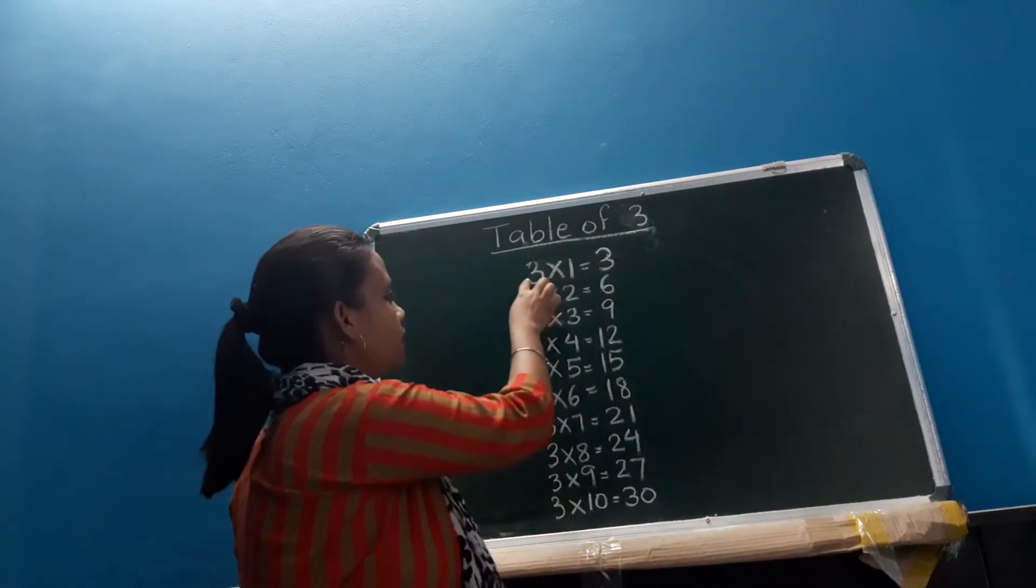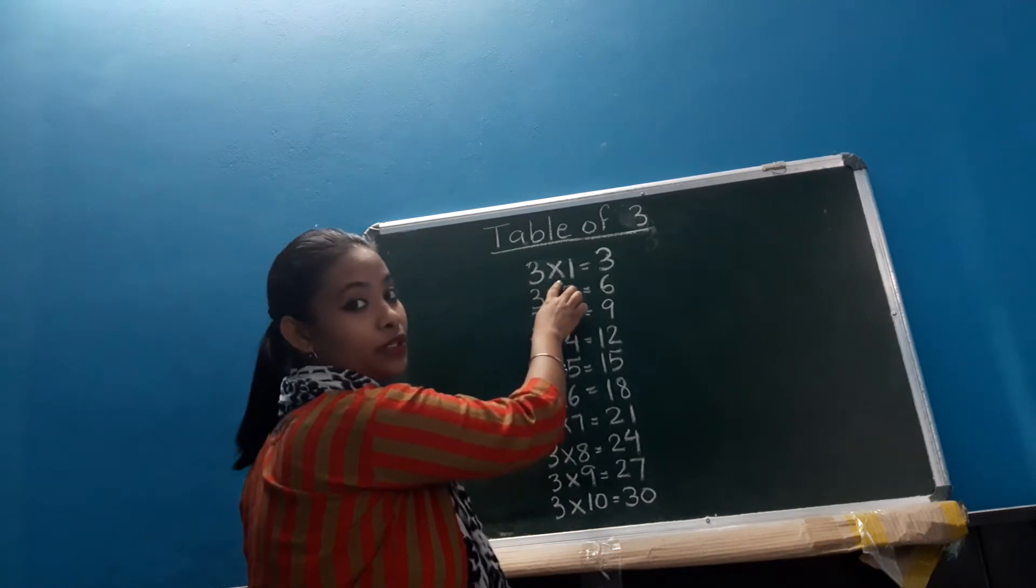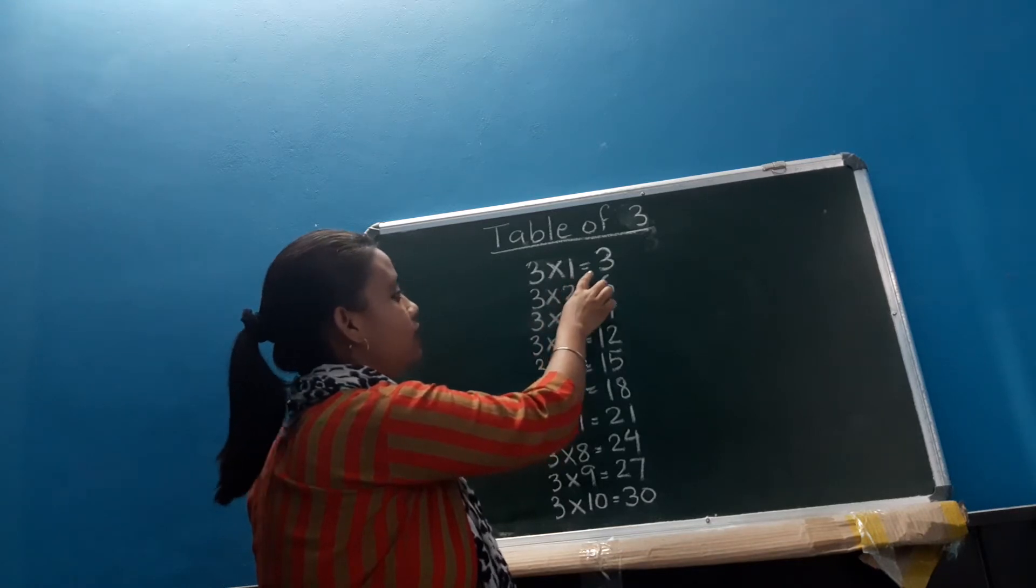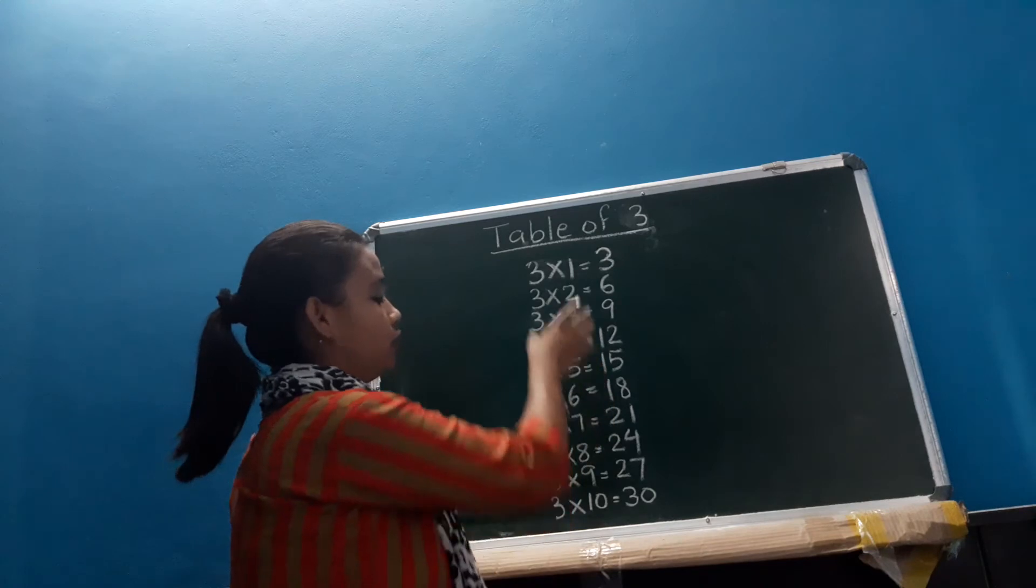So as you can see here, this is number 3 and this is multiplied. And this is number 1 and this is equals to and this is number 3, alright?